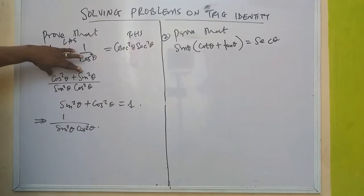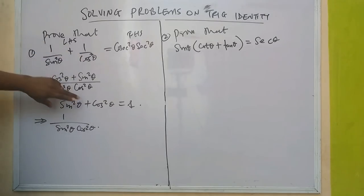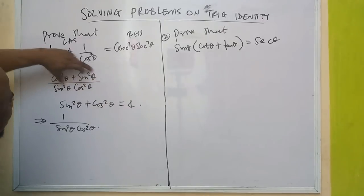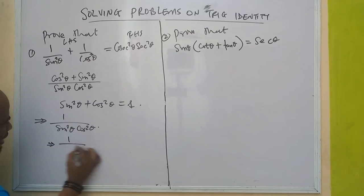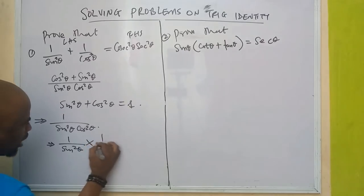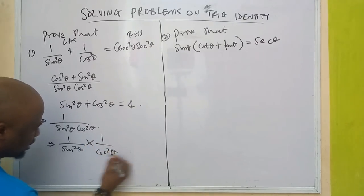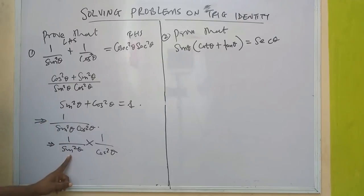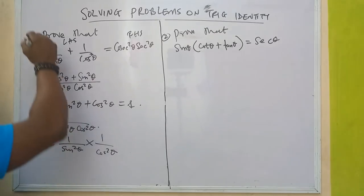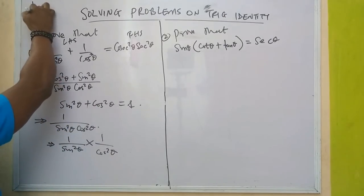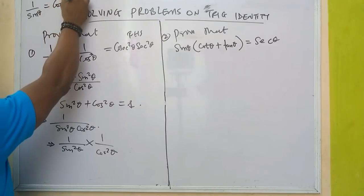That means we have 1 over sine²θ · cos²θ. Everything here is equal to 1 over sine²θ · cos²θ. This can be written as 1/sine²θ times 1/cos²θ. One multiplied by one is one, over sine²θ multiplied by cos²θ.